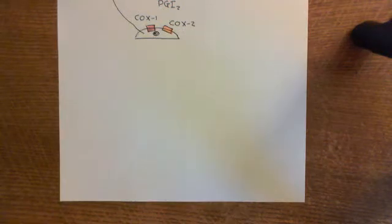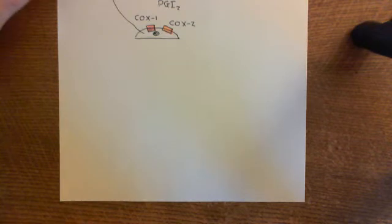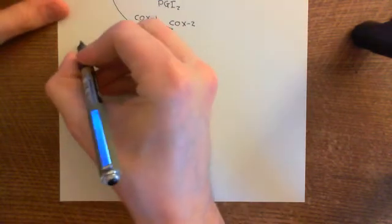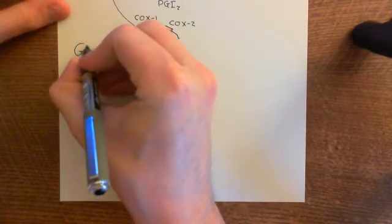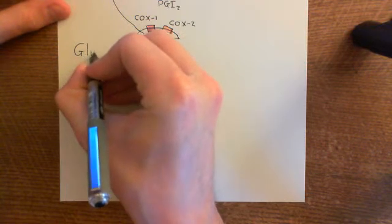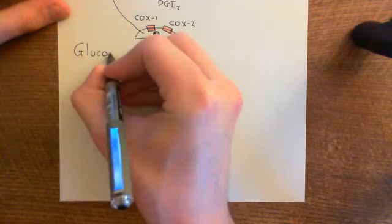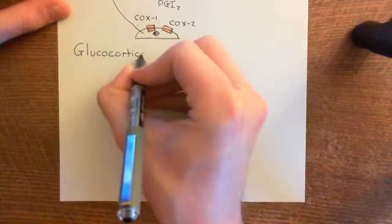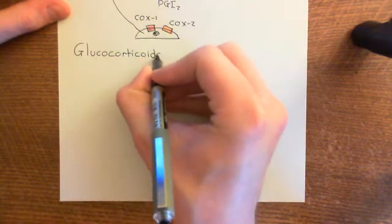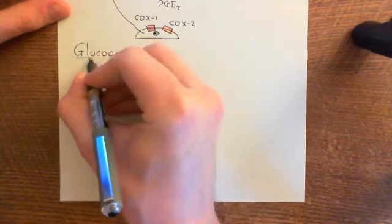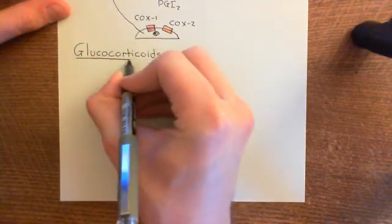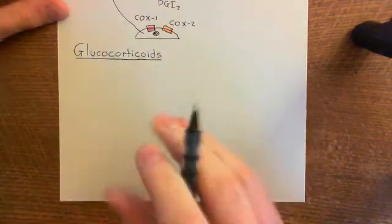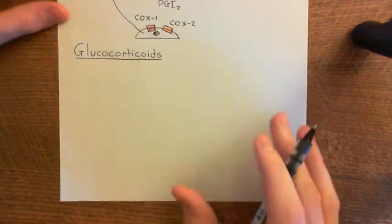Welcome to this next video in which we're discussing the acute inflammatory response and the anti-inflammatory drugs. In this next video, what we're going to talk about is the glucocorticoids, which is a very powerful family of drugs which are both anti-inflammatories and also immunosuppressants. We're only going to look at their anti-inflammatory effects, but it's worth noting that they are an example of a drug which has both anti-inflammatory and immunosuppressive effects.